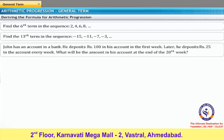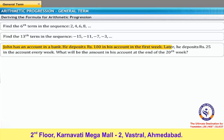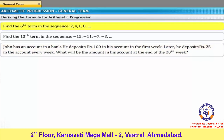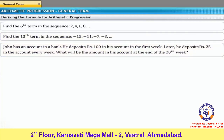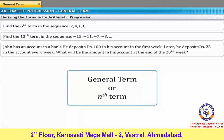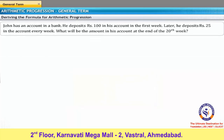Consider the following problems regarding arithmetic progression. Find the sixth term in the sequence 2, 4, 6, 8, and so on. Find the thirteenth term in the sequence minus 15, minus 11, minus 7, minus 3, and so on. John is saving money in a bank. He deposits 100 rupees in the first week, then deposits 25 rupees every week. What will be the amount in his account at the end of the twentieth week? It is easy to find the sixth term in problem 1. However, problems 2 and 3 may take a while. To solve such problems quickly, you can derive a formula to determine the nth term or the last term in a sequence.